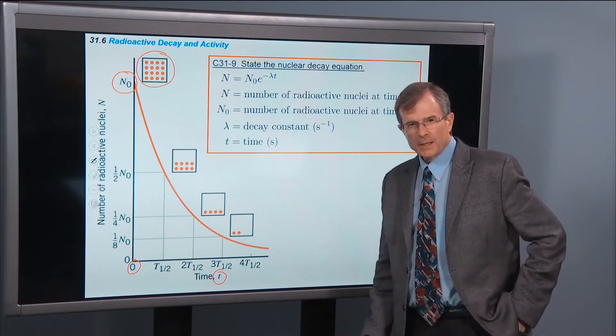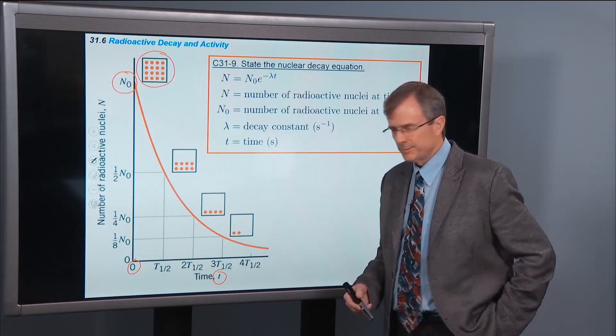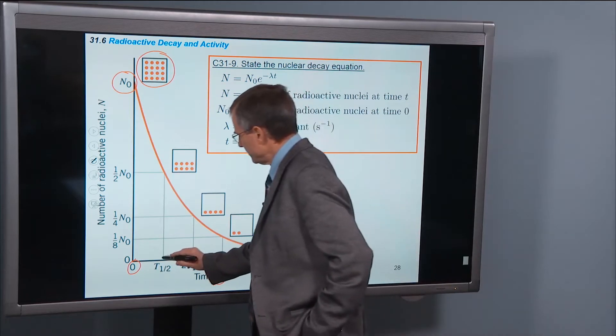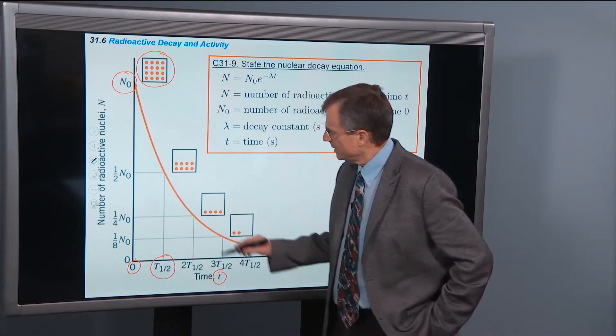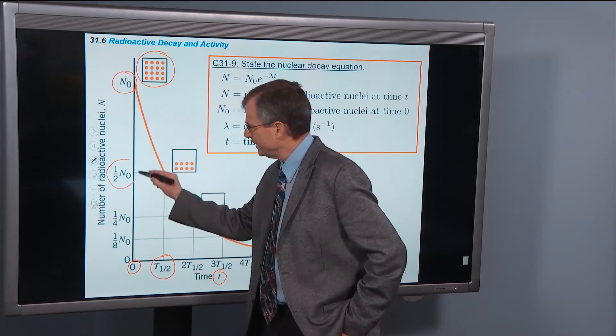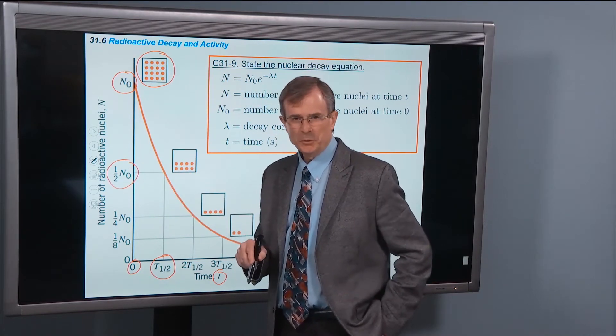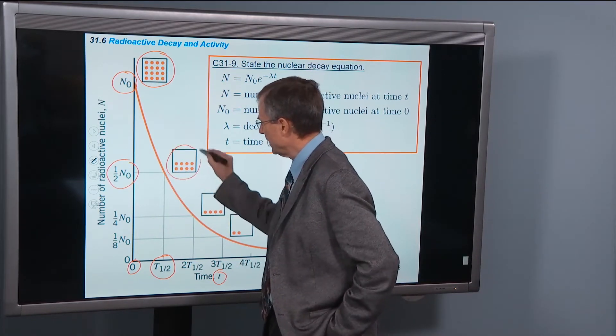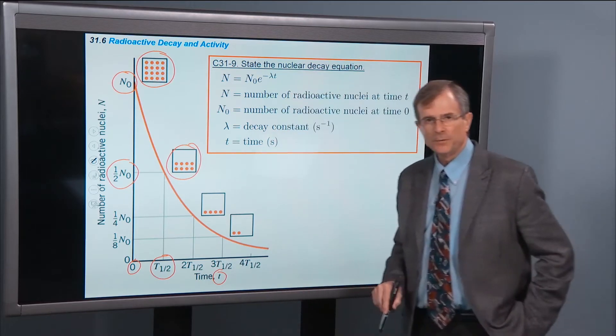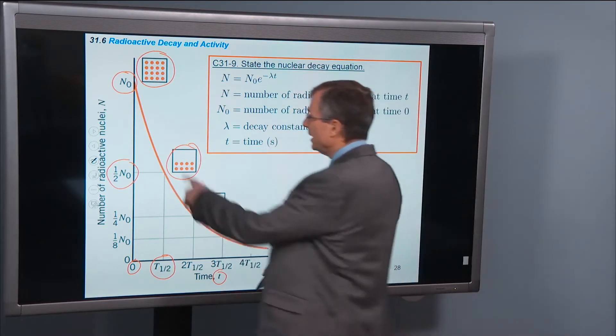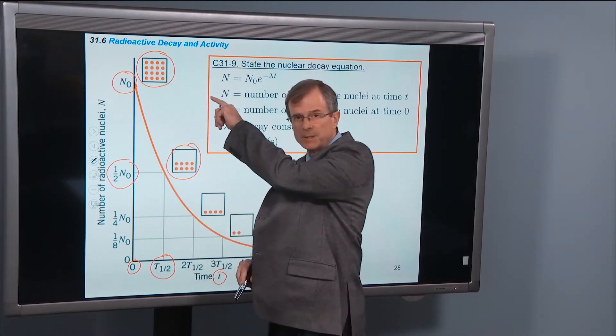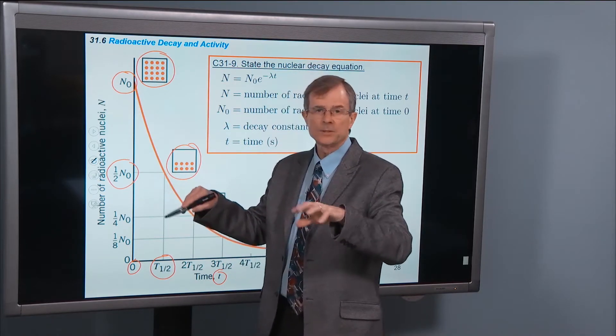Then if you wait what's known as the half-life, T½, then you'll have half the initial number of nuclei left. So in this case we'll have 8 radioactive nuclei. So what happened to the other 8 that disappeared? Well they decayed into daughter products.